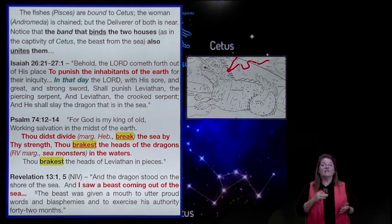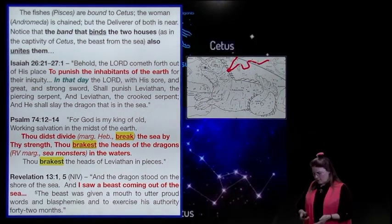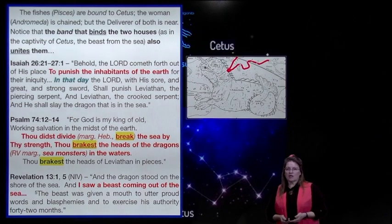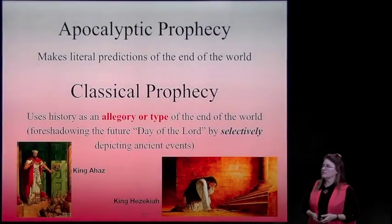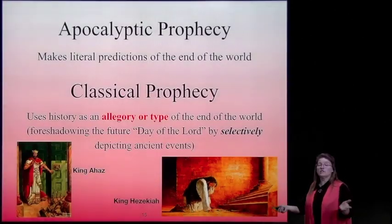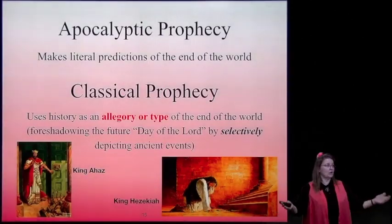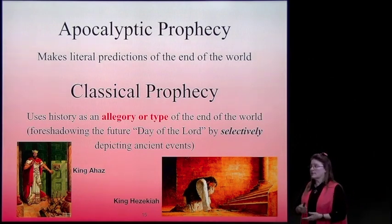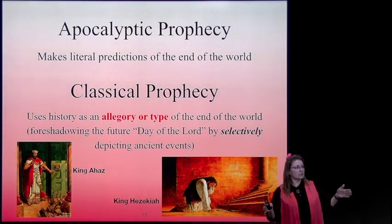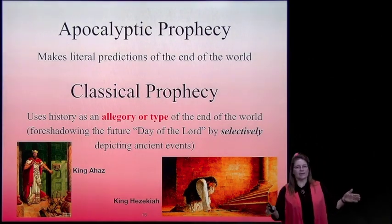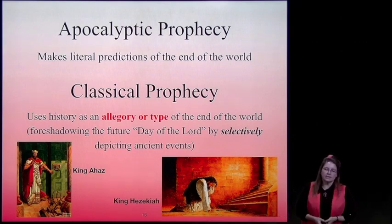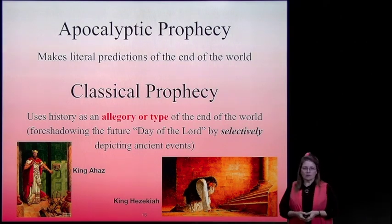These are all images of the adversary in the sky—the opponent to God's plan. And in Revelation, he is going to exercise his authority 42 months or three and a half years. We're going to see that particular length of time in prophecy many, many times in other lessons.